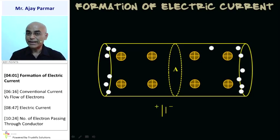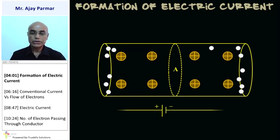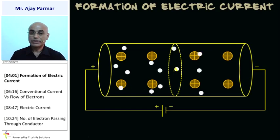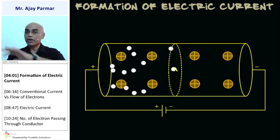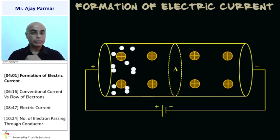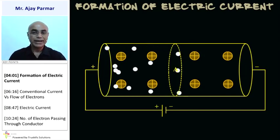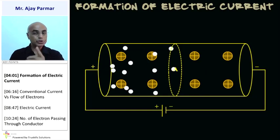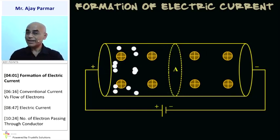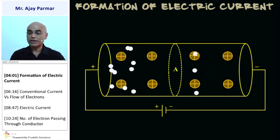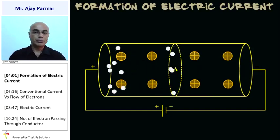Then how does current flow? Suppose we connect this electrical wire to a source of electricity — like a battery. When electric current is allowed to pass, all the electrons are drifted in one direction: from the negative terminal of the battery to the positive terminal. Energy has to be provided to the electrons, and only then can they drift in one direction — and when they start drifting, we say electric current has been formed.